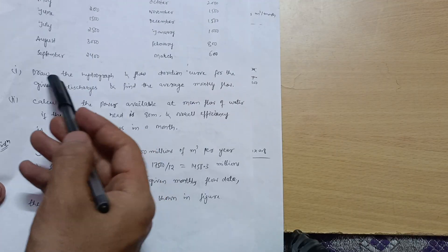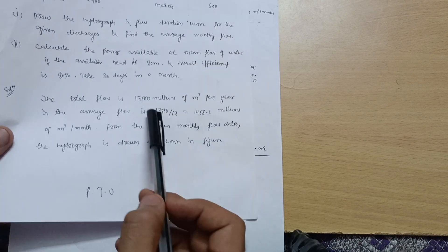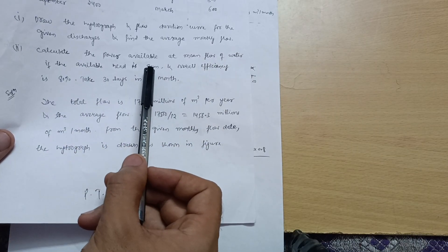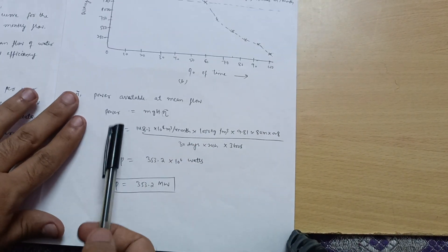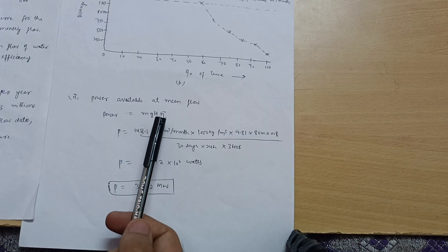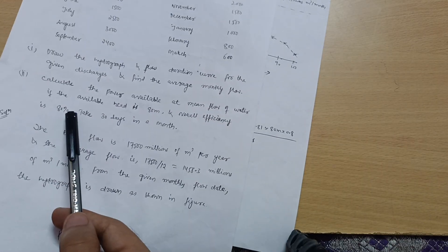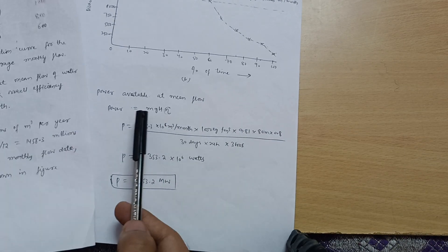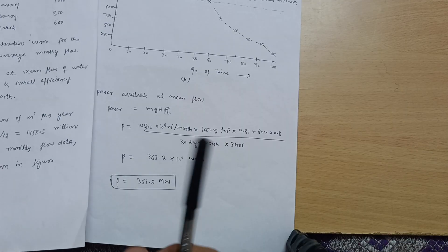Part one is now complete — we have drawn the hydrograph, flow duration curve, and calculated the average monthly flow of 1458.3 million meter cube per month. For part two, calculate the power available at mean flow. Given: head H = 80 m, overall efficiency η = 80%, 30 days per month.